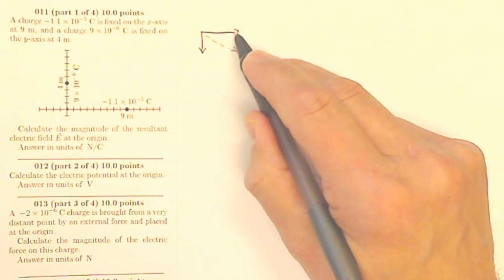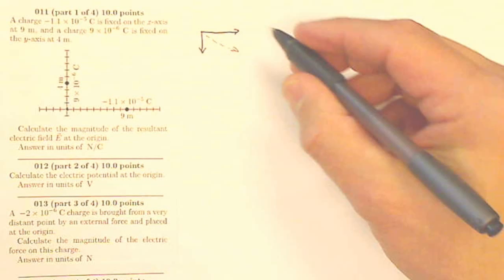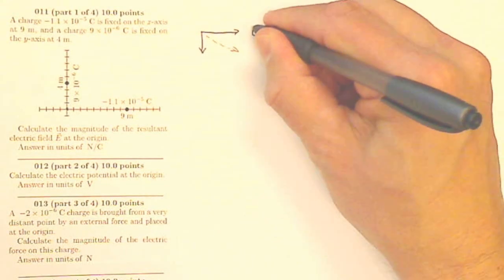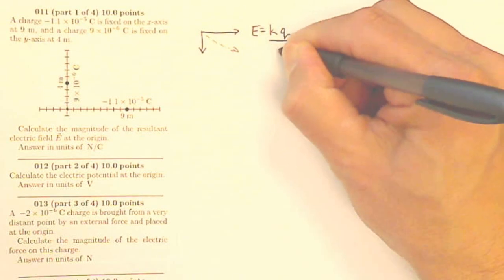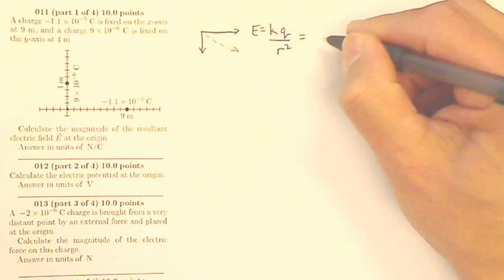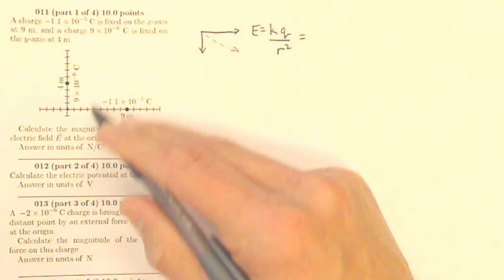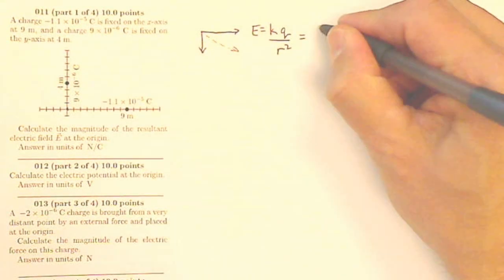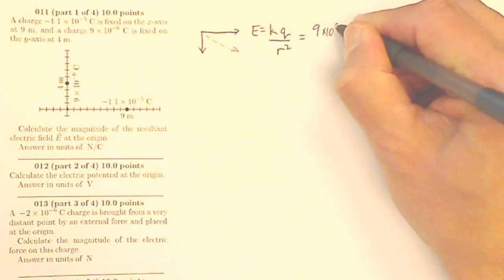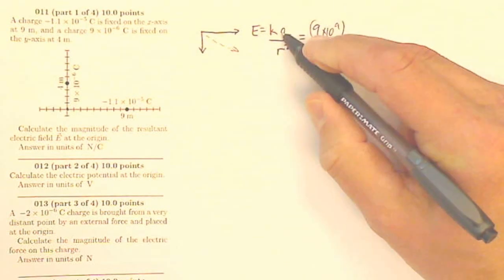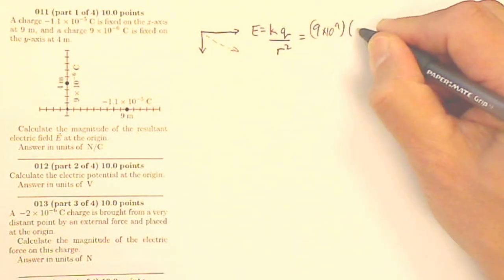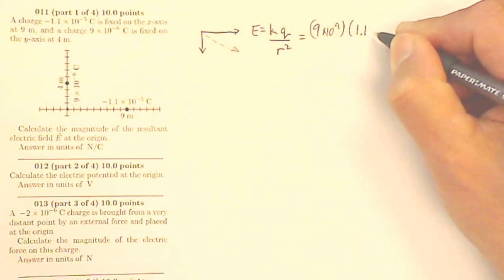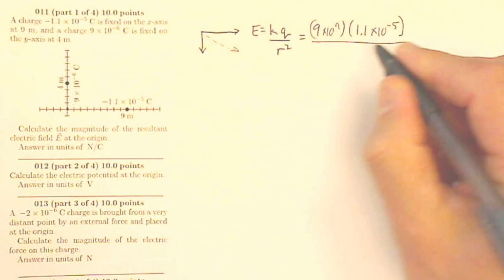So I just need to calculate this field and this field. This one is going to be E equals KQ over R squared, where it's going to be your Coulomb constant, which I don't think they tell you, so we'll just go 9 times 10 to the 9th, times the amount of charge 1.1 times 10 to the minus 5th. I'm just going to absolutely value it because we're worried about the magnitude.